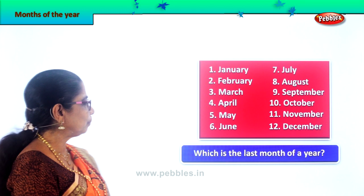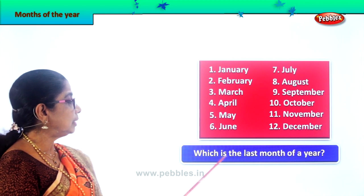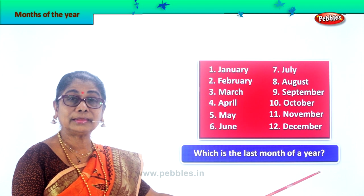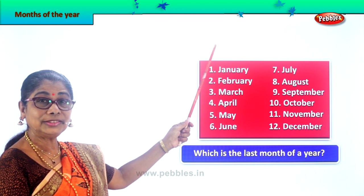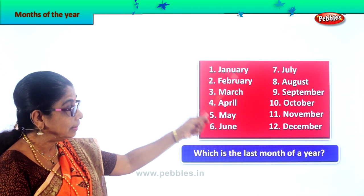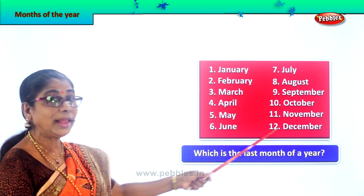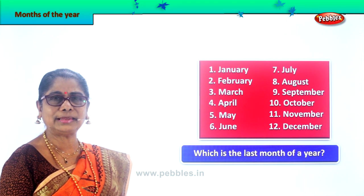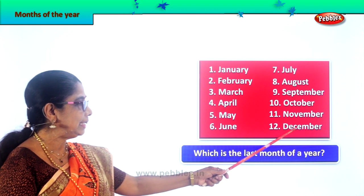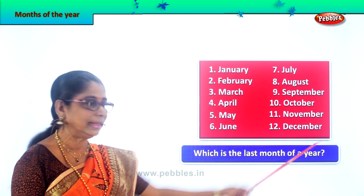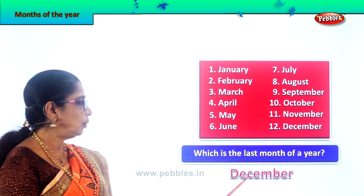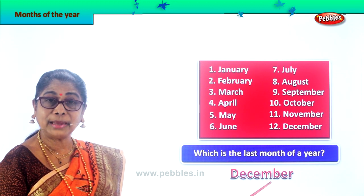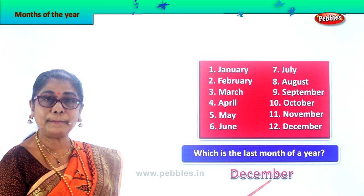Let us take another question. Which is the last month of the year? December. The first month is January, the last month is the 12th month — that is December. So your answer is: December is the last month of the year.